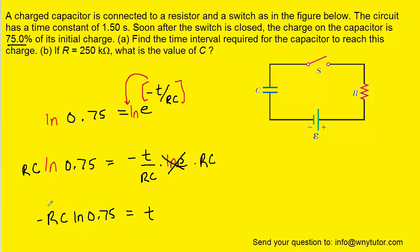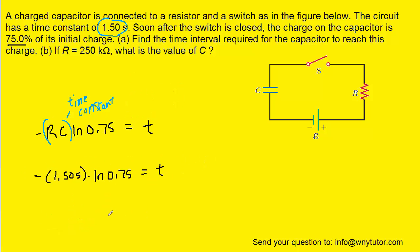Now we've isolated t. We note that RC is the value of the time constant. Looking back at the question, we were told the time constant has a value of 1.5 seconds. So we plug in 1.5 seconds for RC. Once we type the left side of the equation into our calculator, we get that the time is approximately 0.432 seconds. This is the time required for the capacitor to reach 75% of its initial charge.